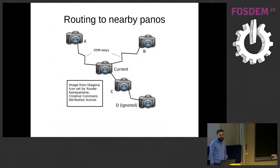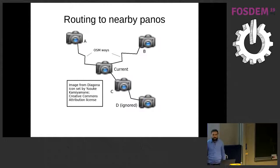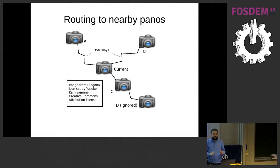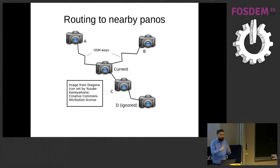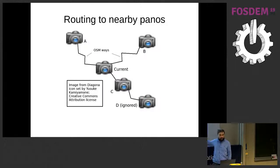There are a couple of things to bear in mind when routing to nearby panoramas, because it could be that we find two in the same direction. In this example, we've got our current panorama in the middle and four nearby panoramas — A, B, C, and D. But to route to C and D, we route along the same OSM way. So clearly we don't want the current panorama to be connected directly to D, because it's connected through C. What we do is filter out: if we have more than one panorama along a way in a particular direction, we only take the nearest and filter out any further ones in that direction.